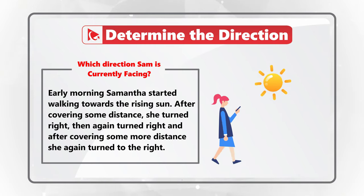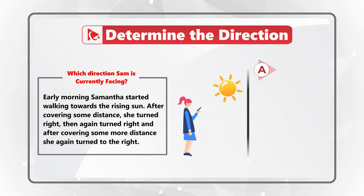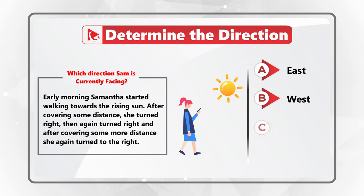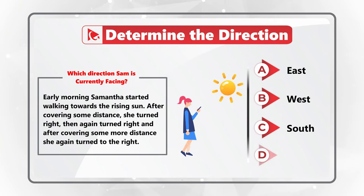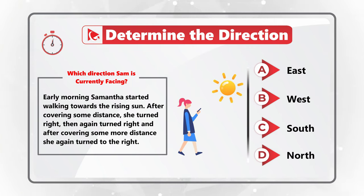You have 4 different choices. A: East. Choice B: West. Choice C: South. Choice D: North. Give yourself a little bit of time to see if you can answer this question.